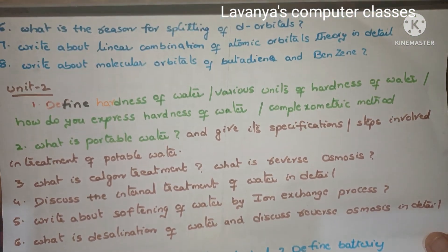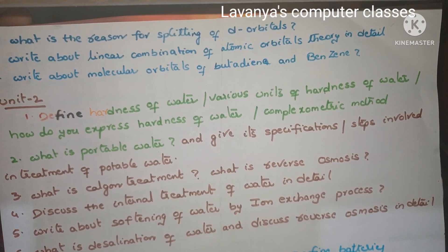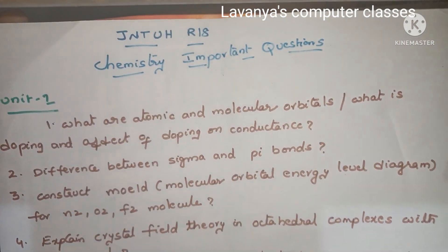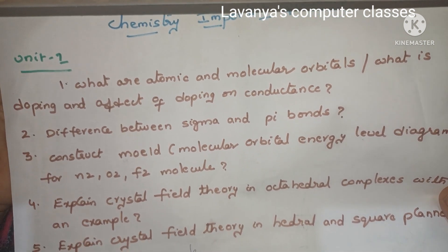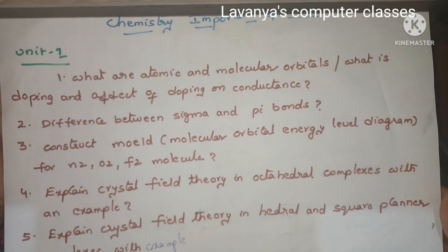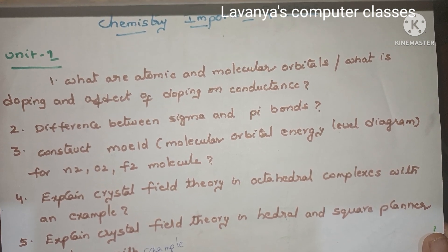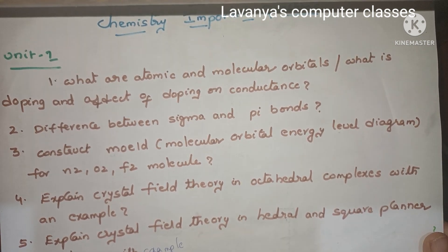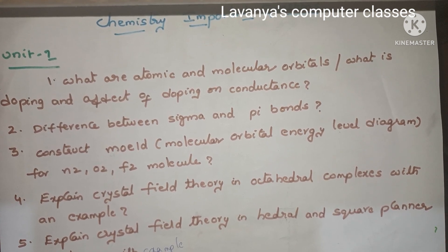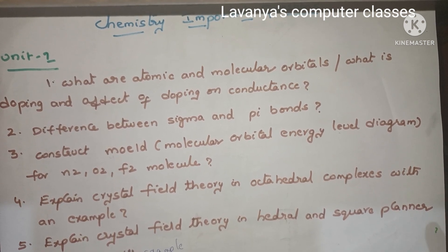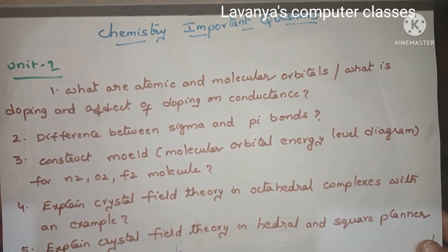Take the screenshot and read all the questions thoroughly. Select any 3 units — 3 to 3 and a half units as you wish. Read all the questions thoroughly. Write the exam well and clear all your papers. Thank you for watching my video. If you like this video, please subscribe to my channel and share it with your friends. Thank you.